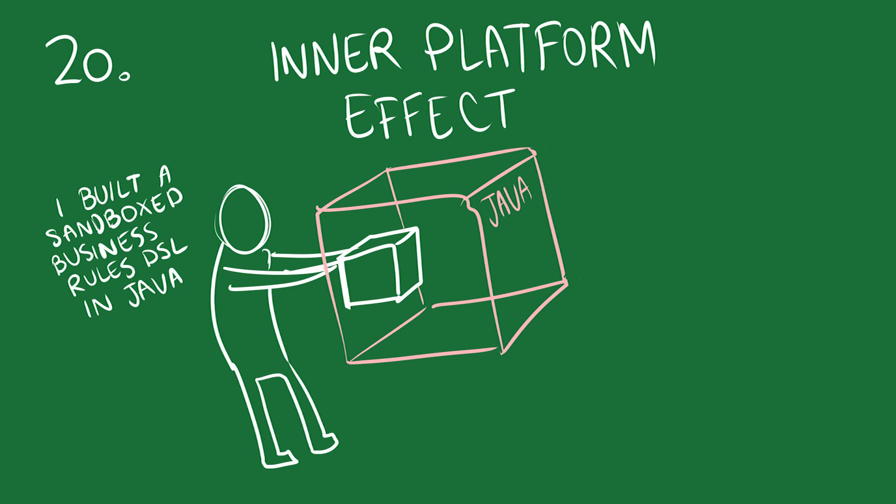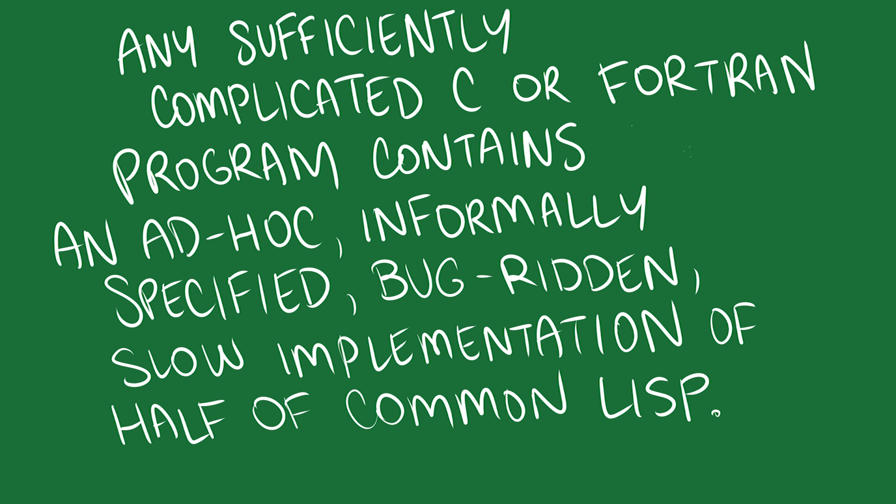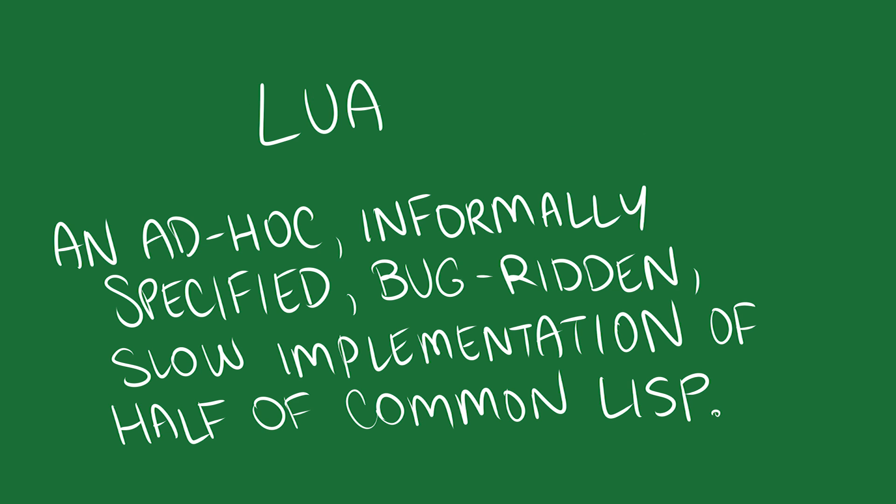A specific invocation of this, Greenspun's 10th rule, reads as follows. Any sufficiently complicated C or Fortran program contains an ad hoc, informally specified, bug-ridden, slow implementation of half of common Lisp. And if you want that in your system, you can just embed Lua or write the program in Lisp in the first place and save yourself all the time of building it.